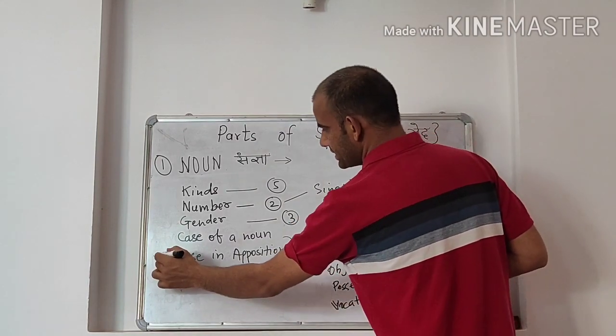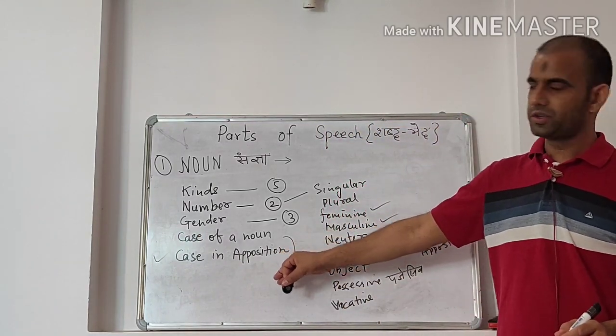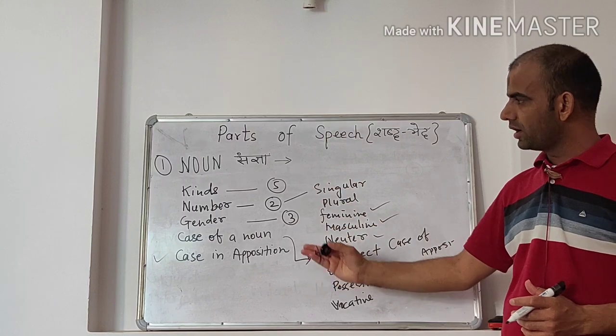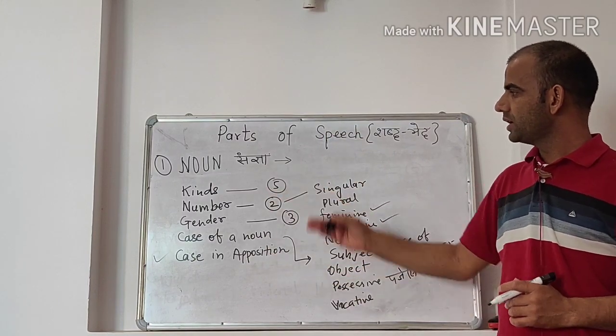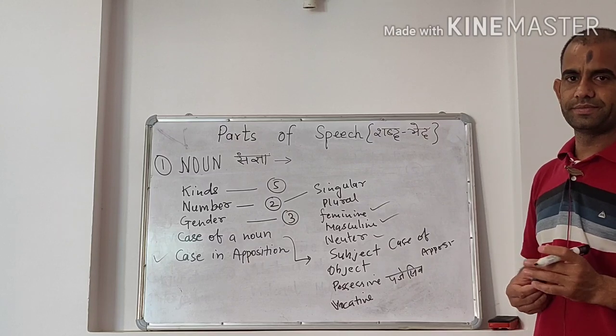So these are four functions mainly of noun and you can include one more function in this and this is case of apposition. Here I have written it, case of apposition. So these are five works of noun and we will study all these five works similarly.